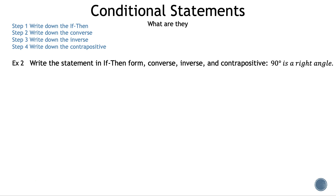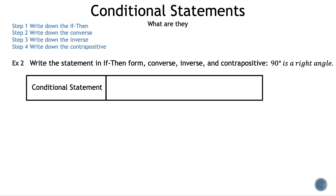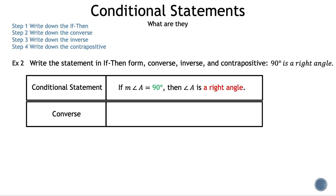Let's move on to example 2. Write the statement in if-then form, converse, inverse, and contrapositive, where the statement is '90 degrees is a right angle.' The conditional statement in if-then form is: if the measure of angle A is 90 degrees, then angle A is a right angle. Next, let's find the converse. The converse statement is: if angle A is a right angle, then the measure of angle A is 90 degrees.